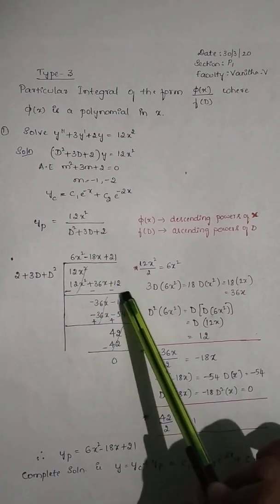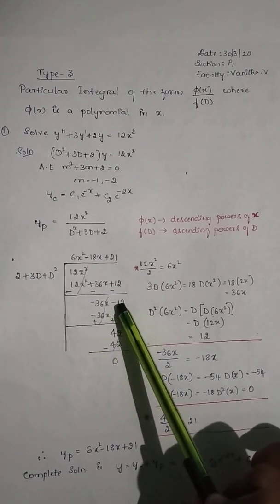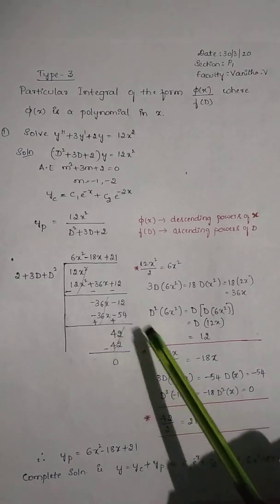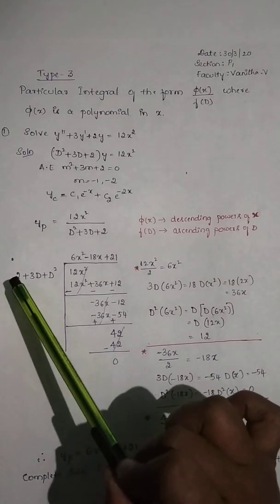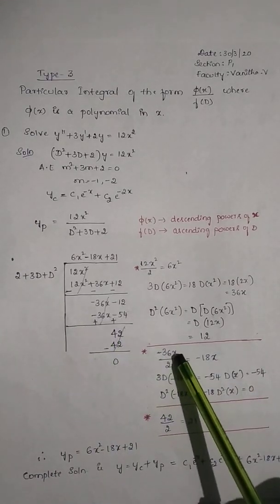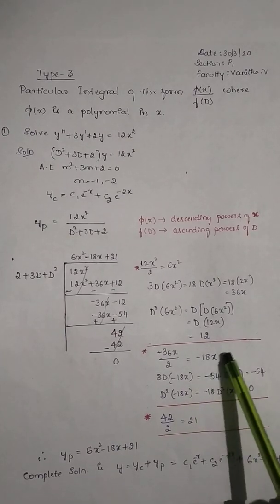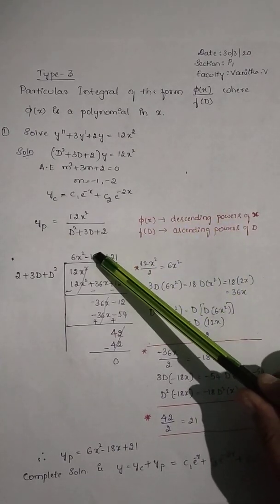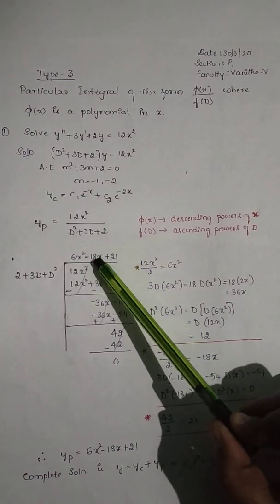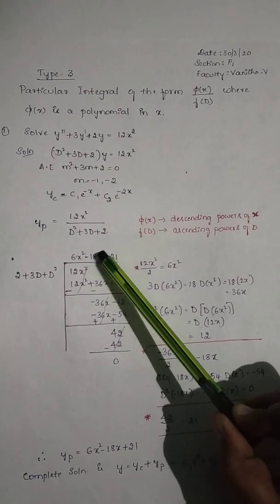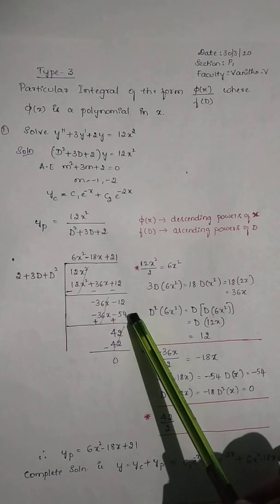Change the sign in the second line, cancel 12x², and write the remainder: the remainder is −36x − 12. In the second step, repeat the same process — divide the first term of the remainder by the first term of the divisor: −36x ÷ 2 = −18x. Write −18x in the quotient next to 6x². Then multiply −18x by all terms of f(D) and write the answer in the fourth line.